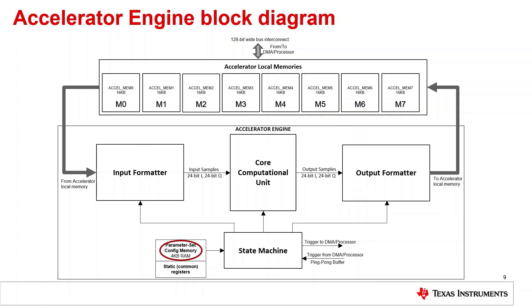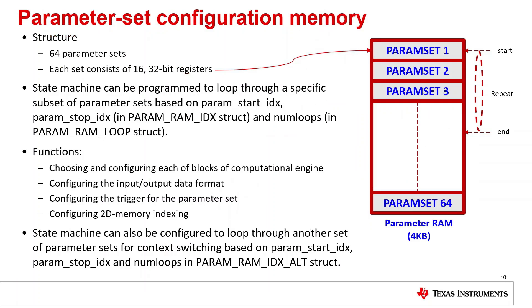Then we have the parameter set config memory block. It has 64 parameter sets where each is a 1632-bit register. The state machine can be programmed to loop through various parameter sets one after the other to achieve a particular operation. Its functions include choosing and configuring each part of the computational engine, configuring the input or output data format, 2D memory indexing, and providing the trigger for each parameter set. Parameter set configuration memory can also be used to set up context switching operation using various struct variables of param_ram_index_alt struct.